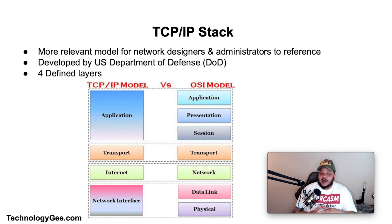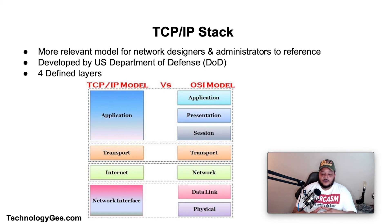The TCP/IP stack is a more relevant model for network designers and administrators to reference, which was developed by the United States Department of Defense. The TCP/IP stack has only four defined layers, as opposed to the seven layers of the OSI model, allowing network designers and administrators to more easily categorize a given networking technology into a specific layer. The four layers are: the Network Interface Layer, which maps to layers one and two (physical and data link) of the OSI model.